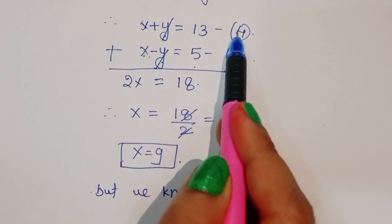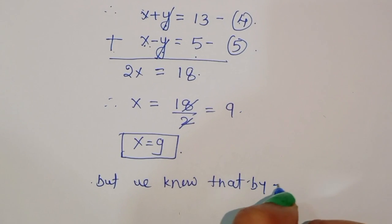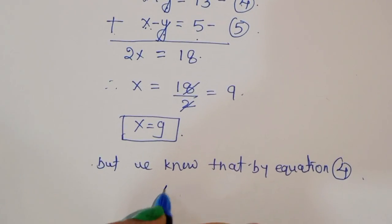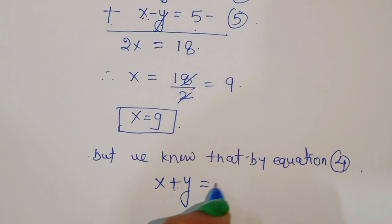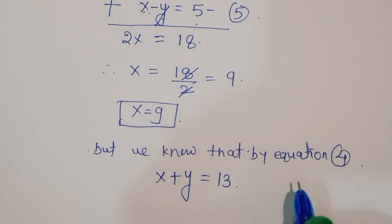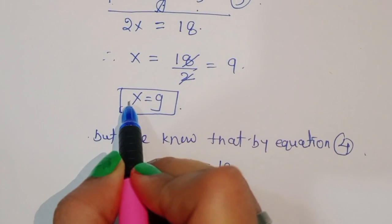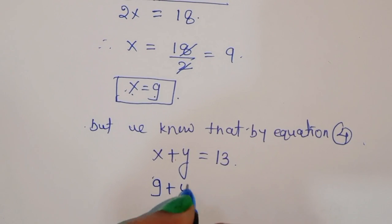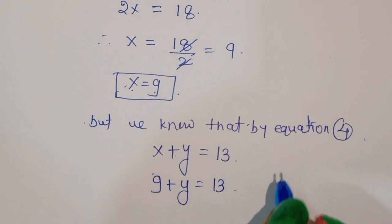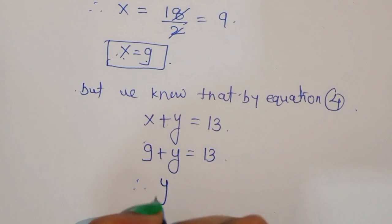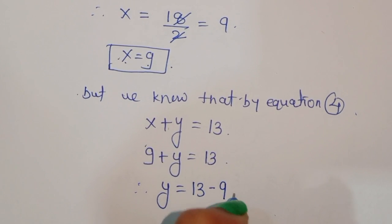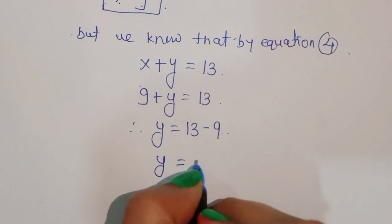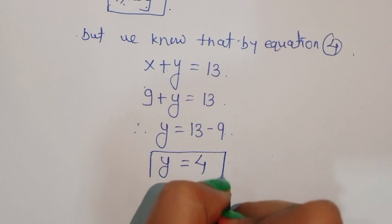By equation 4, we know that x plus y is equal to 13. We got the value of x, that is 9. So substituting this value: 9 plus y is equal to 13. Therefore y is equal to 13 minus 9, so y equals 4. This is the value of y.